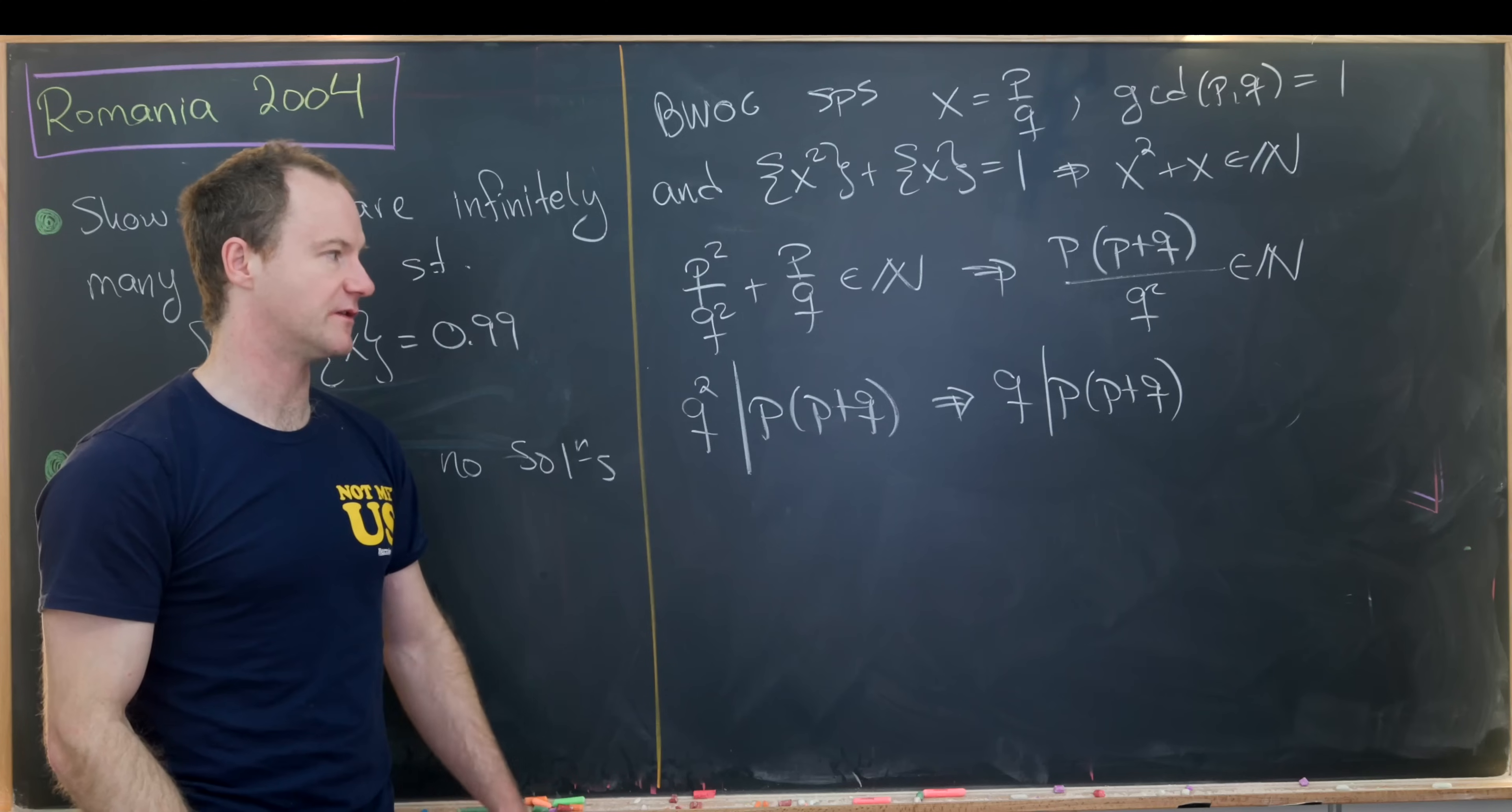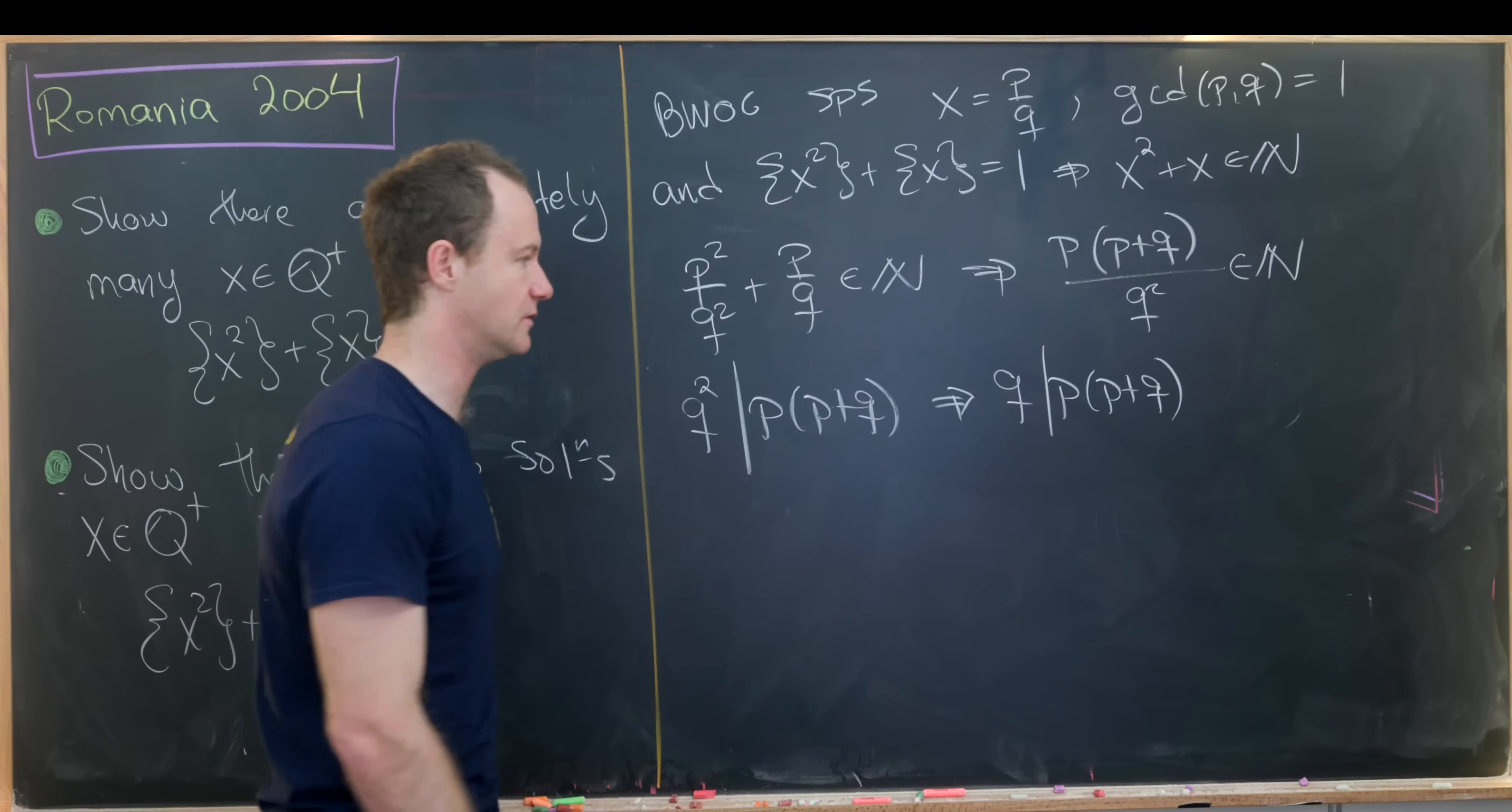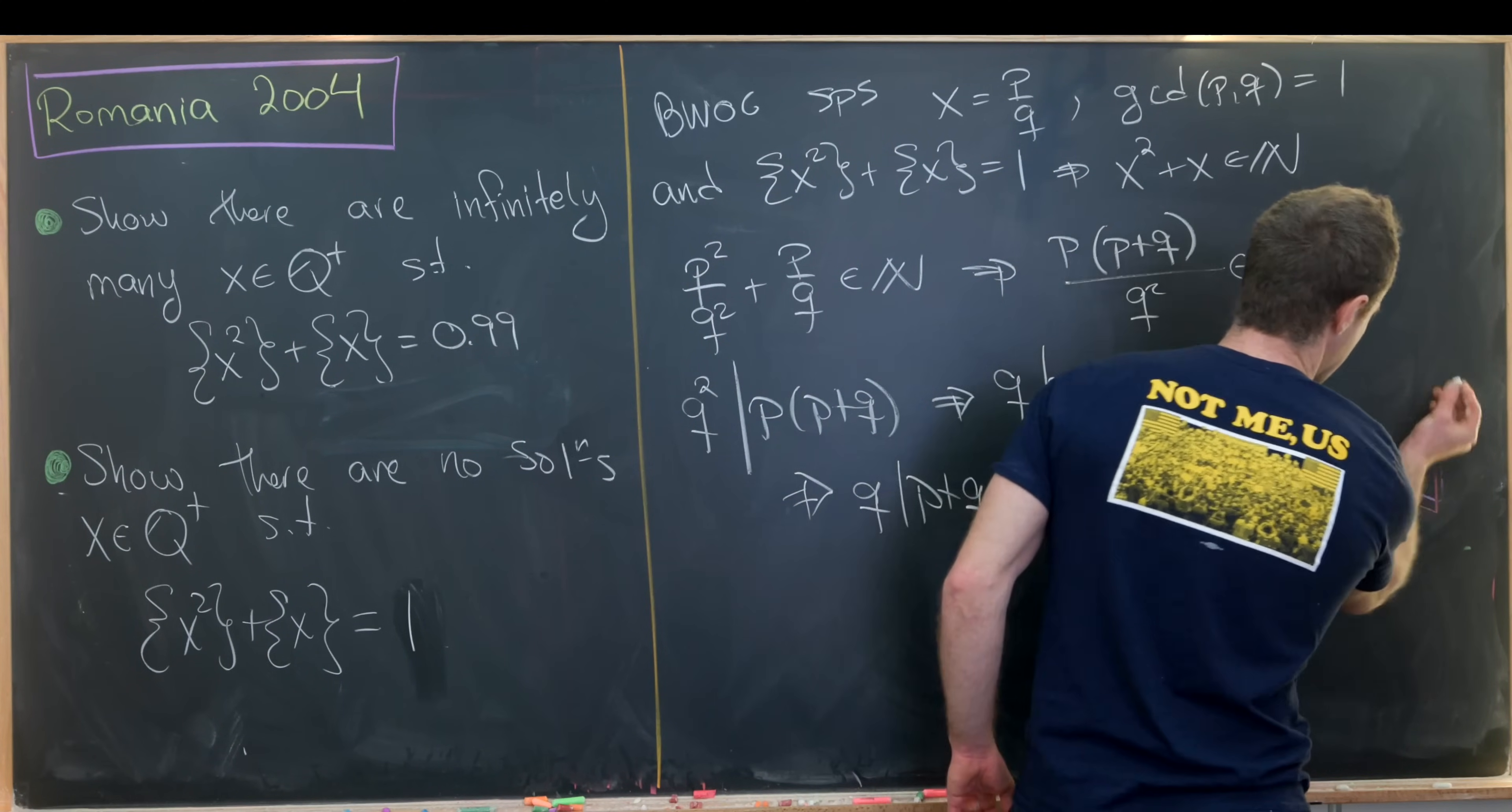But if q divides p times p plus q and the gcd of p and q is one, then that really splits into two cases. Either q is equal to one and thus it divides p, or it cannot divide p and it divides p plus q. So that tells us that q divides p plus q, but then q divides itself so it divides the difference of p plus q and q, meaning it divides p. So we've got q divides p, but that tells us that the gcd of p with q is equal to q.